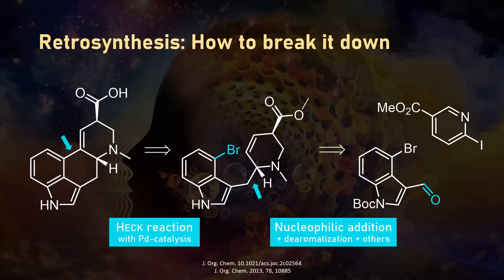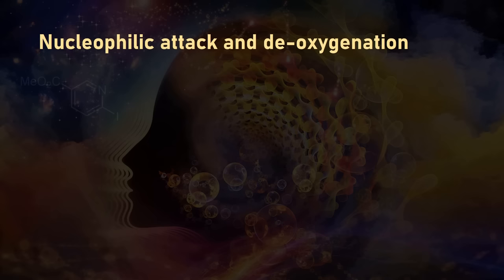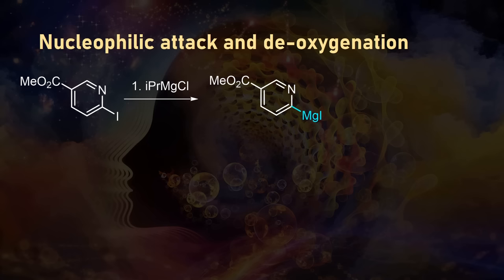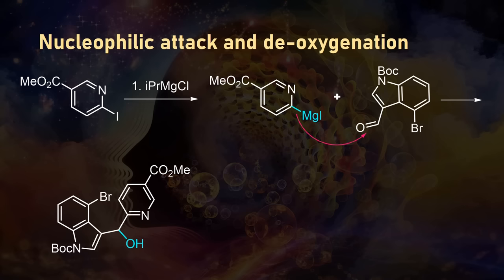The first step was a magnesium-halogen exchange of this iodopyridine to create a heterocyclic nucleophile. It is very happy to attack the electrophilic carbon of the functionalized aldehyde, leaving a hydroxyl group in the product. As you might remember, there is no oxygen in lysergic acid at this position, so the next step simply removed this group by reduction with triethylsilane.